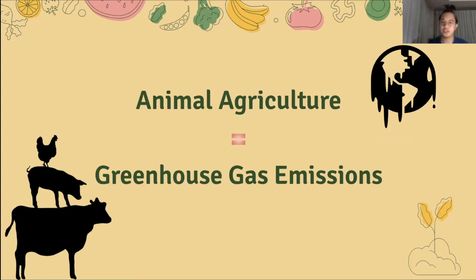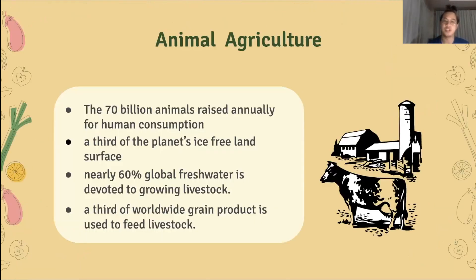Animal agriculture is the second largest contributor to human-made greenhouse gas emissions after fossil fuels. It is a leading cause of deforestation, water and air pollution, and biodiversity loss. Many of Earth's precious land, water, and energy resources are stressed by animal agriculture. In order to accommodate the 70 billion animals raised annually for human consumption, a third of the planet's ice-free land surface, as well as nearly 16 percent of global fresh water, is devoted to growing livestock.